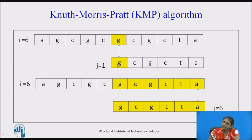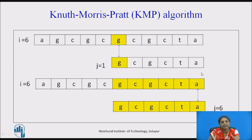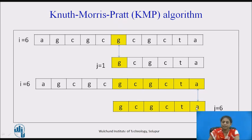From position 6, J is set to 1 and incremented through 2, 3, 4, 5, 6 — all characters match. We have reached the end of the pattern, so the pattern is found. In KMP, we first calculate the prefix values and use them while shifting the window — the window shifts by a number of positions determined by the prefix value, not always by one.